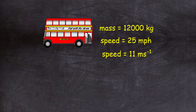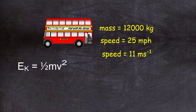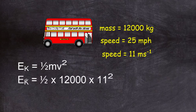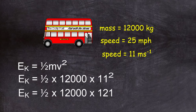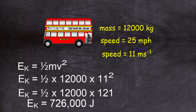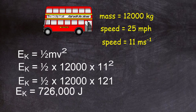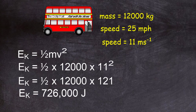Now we have the mass and the speed, so we can work out the kinetic energy. Kinetic energy equals one half times the mass times the speed squared: EK equals one half times 12,000 times 11 squared. The 11 squared is on its own — you don't square anything else. So 11 squared equals 121, giving one half times 12,000 times 121. Doing that in the calculator gives the kinetic energy of a moving double-decker bus as 726,000 joules.